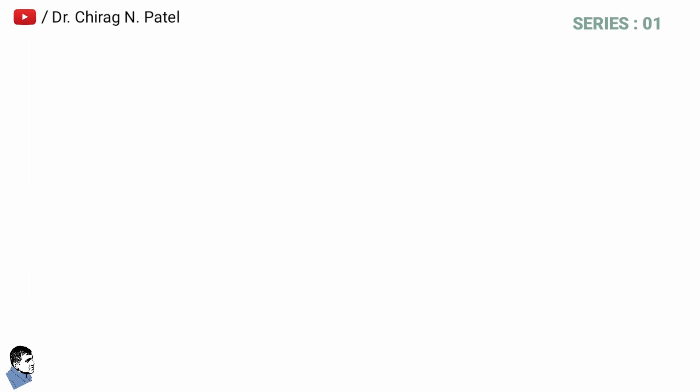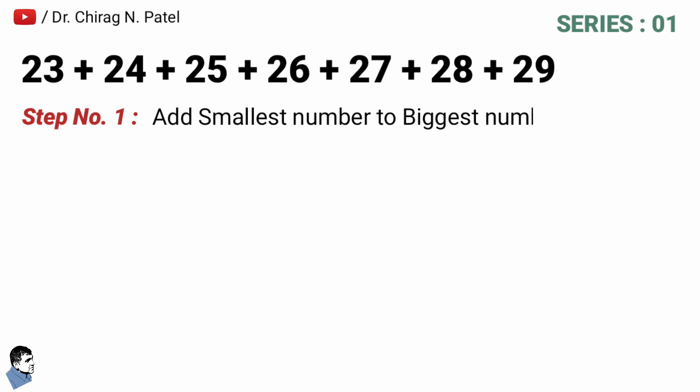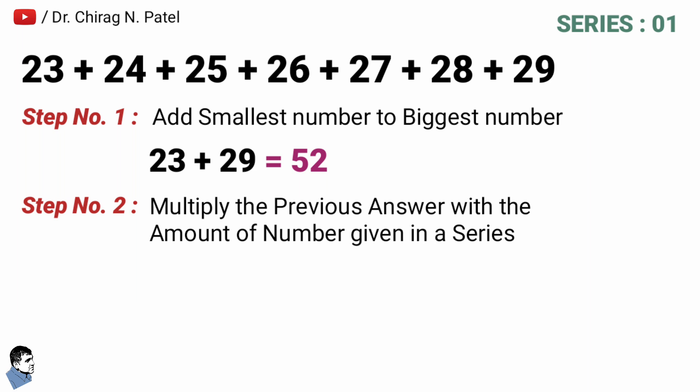Let's take a first series of consecutive numbers: 23 + 24 + 25 + 26 + 27 + 28 + 29. Step number one is add the smallest number to biggest number in the given series. That means here 23 + 29 is equal to 52.